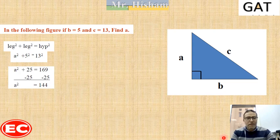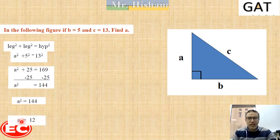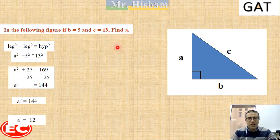So the value of the missing side squared is 144. By taking the square root of both sides, A is equal to 12. Also, 5, 12, and 13 is one of the well-known right angle triangles.